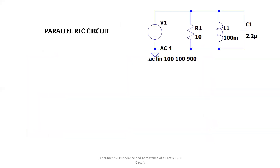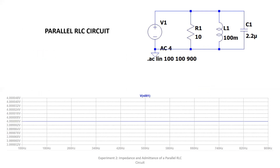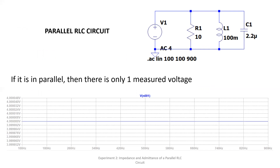For the parallel RLC circuit, we have the same component values but now configured in parallel: 10 Ω, 100 millihenry, and 2.2 microfarad. Our expectation is that the voltage will be the same across all elements since we are in parallel — there is only one node and the other is connected to ground. That concludes our discussion on admittance.